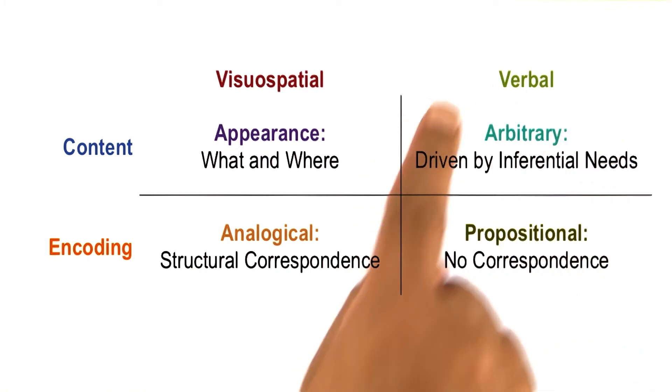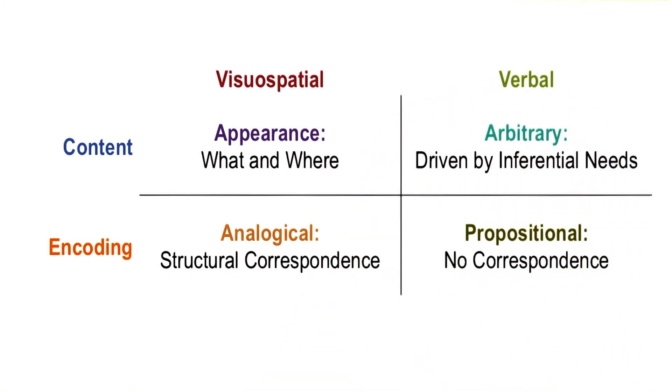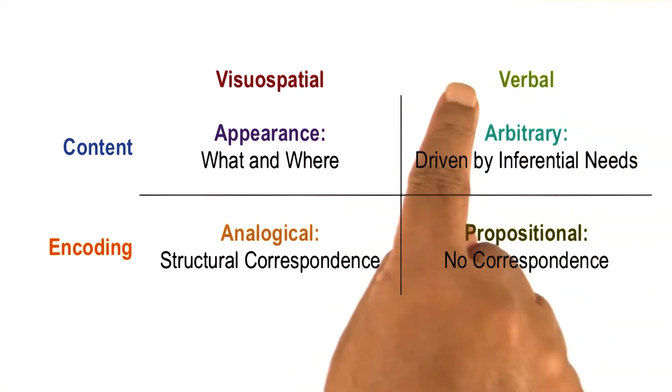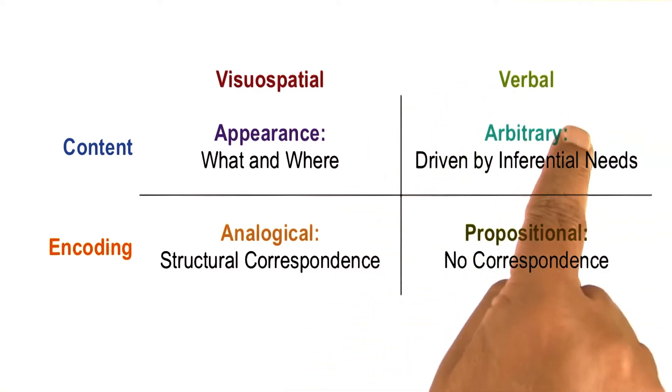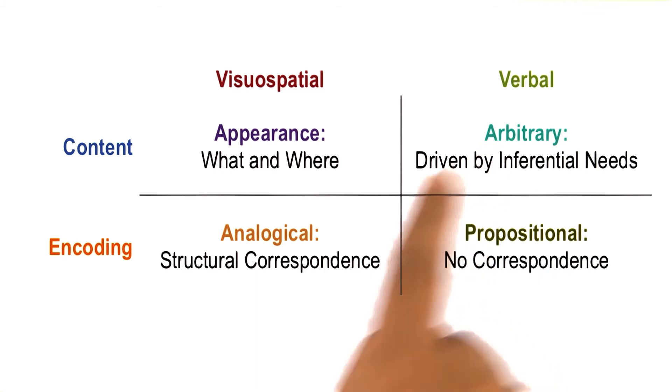Examples of verbal knowledge include things like scripts for going to a restaurant. The script for going to a restaurant can be represented either propositionally or potentially analogically.